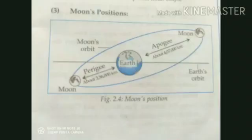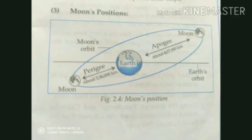Elliptical means oval in shape. With the help of this diagram we will learn about the moon's position. This blue color oval shape is the orbit of the moon. You can see that from one side the moon is closer to the earth, and on the other side the moon is far away from the earth. Because of this elliptical orbit, both sides of the moon are not at equal distance. When the moon is near to the earth, we call that position perigee.